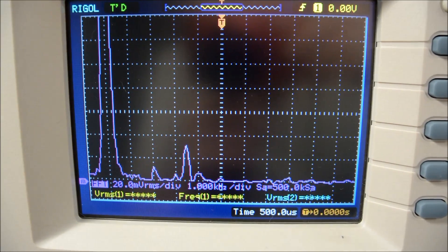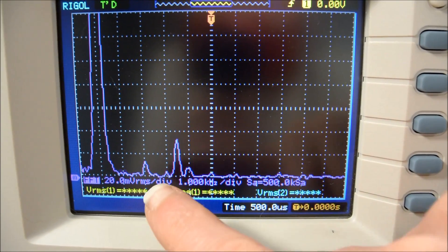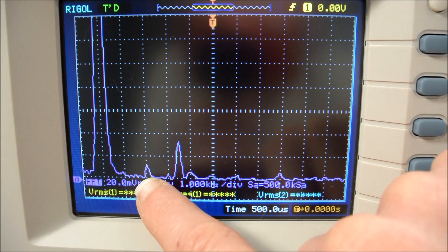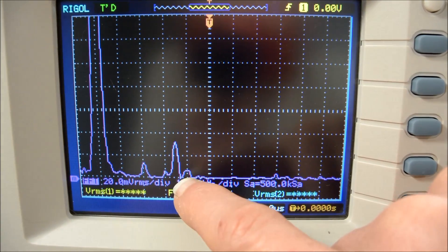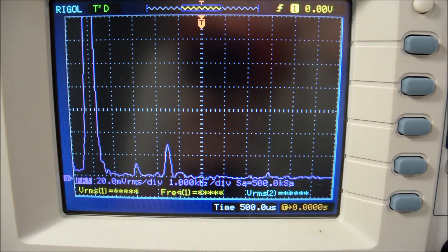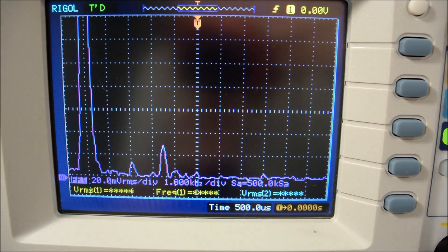And the distortion - distortion is clearly better, it's a smaller harmonic right there. Yeah, a really small harmonic there. It's probably like 0.4%.